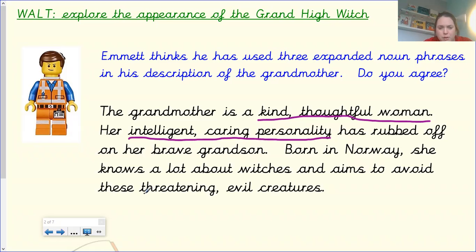Oh, I'm right down the bottom here. We've got threatening evil creatures. Creatures is my noun. Threatening and evil are my adjectives. Have I got them all? I haven't, have I? Can anyone spot the expanded noun phrase that I have not underlined? It's this one here, brave grandson. We don't have to have two adjectives. Sometimes we just have one adjective. It's her brave grandson. So, Emmett hasn't used three expanded noun phrases. He's actually used four.